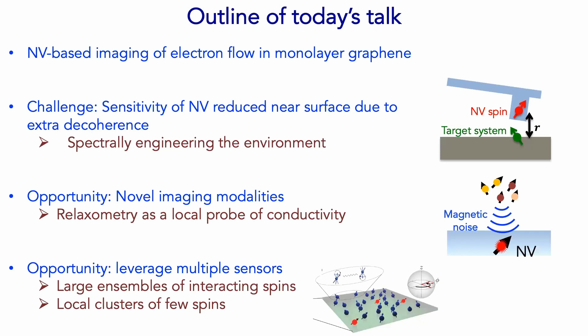Coming back to what I'll be talking about today: the first experiment is how we've used this NV microscope in monolayer graphene, learning something about transitions from ohmic to non-ohmic flow. Then I'll move on to talking about some challenges in terms of pushing the NV center to even higher sensitivity and spatial resolution. One of the main challenges is that you'd ideally like to bring your NV center as close as possible to your target, but surfaces are a notorious source of decoherence. We've addressed some materials engineering techniques and also developed new techniques aimed at spectrally engineering the fluctuations in the environment.